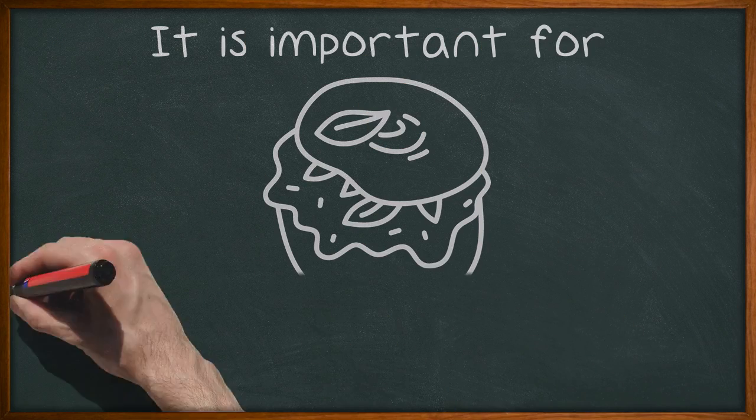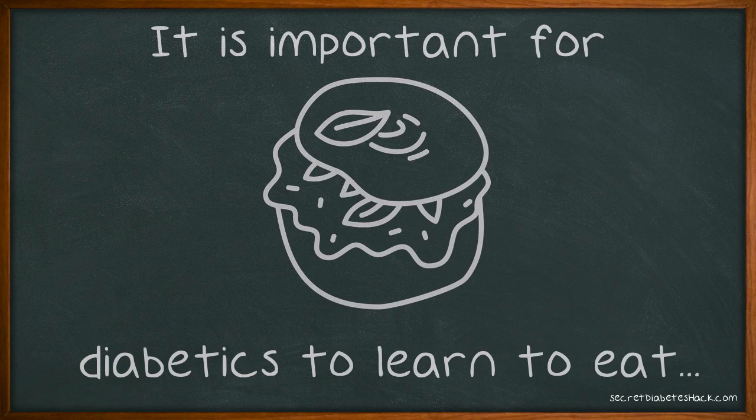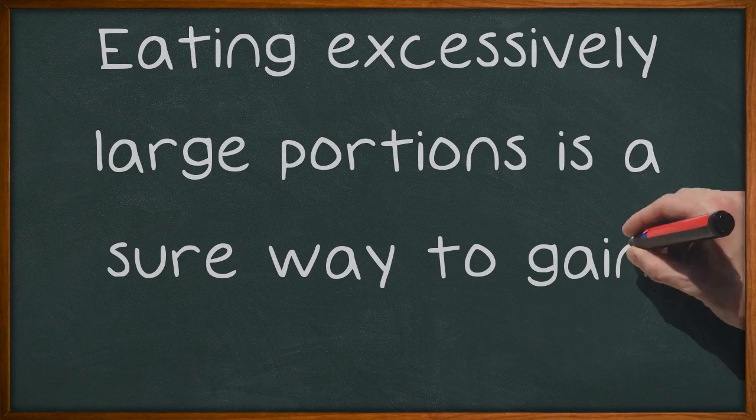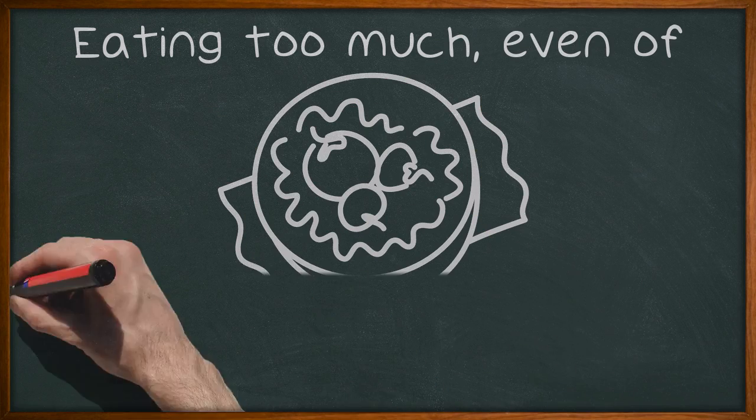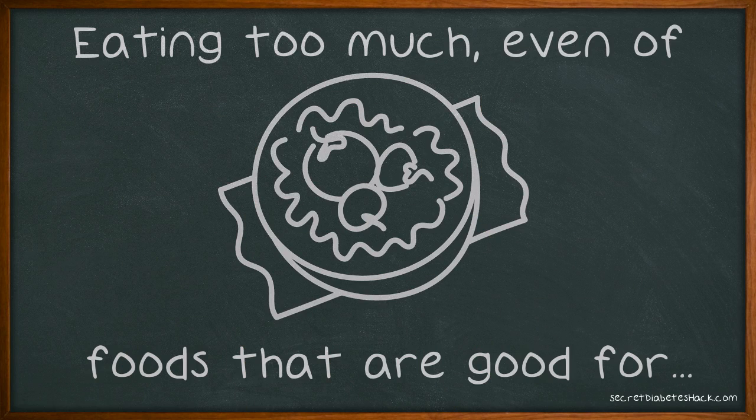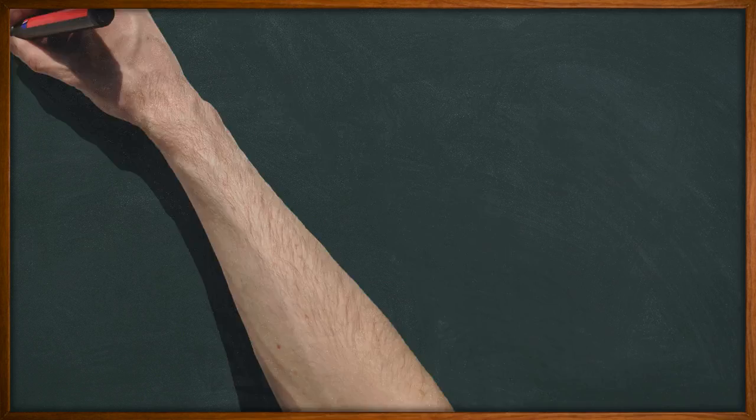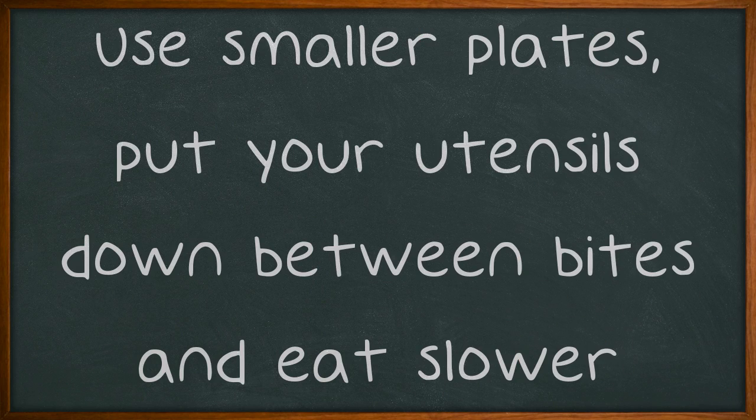It is important for diabetics to learn to eat a healthy diet and control portion sizes. Eating excessively large portions is a sure way to gain weight. Eating too much, even foods that are good for you, will result in weight gain and blood sugar problems. Use smaller plates, put your utensils down between bites, and eat slower.